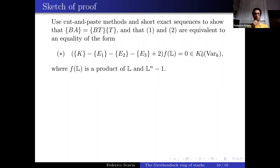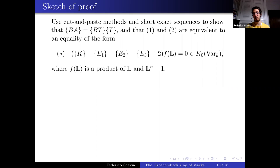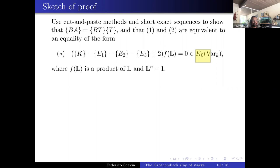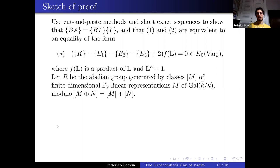Assuming questions 1 and 2 are true (by contradiction), we arrive at this equation. The polynomial f(L) exists because if you forget f(L) you get that the parenthesized expression equals zero in K0 Stacks, and since K0 Stacks is a localization you multiply by something and it's still zero in K0 Var — so it's enough to know the polynomial is monic with integer coefficients.